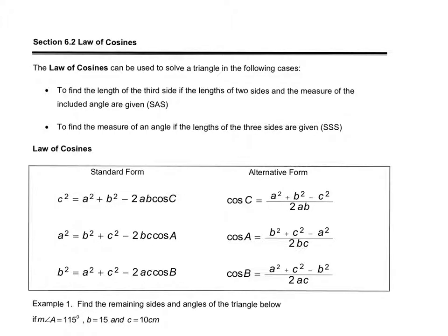In section 6.2 we are learning the law of cosines. This can be used to solve a triangle when we know the length of two sides and the included angle — SAS, where the angle is between the sides — so we can find the third length, or if we know all three sides, we can find the measure of any angle.